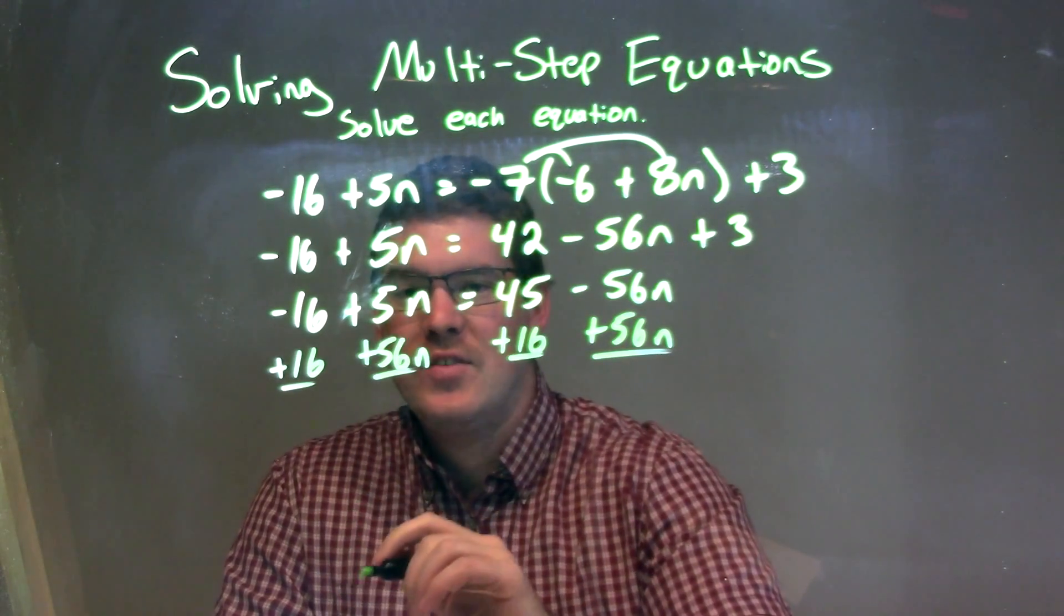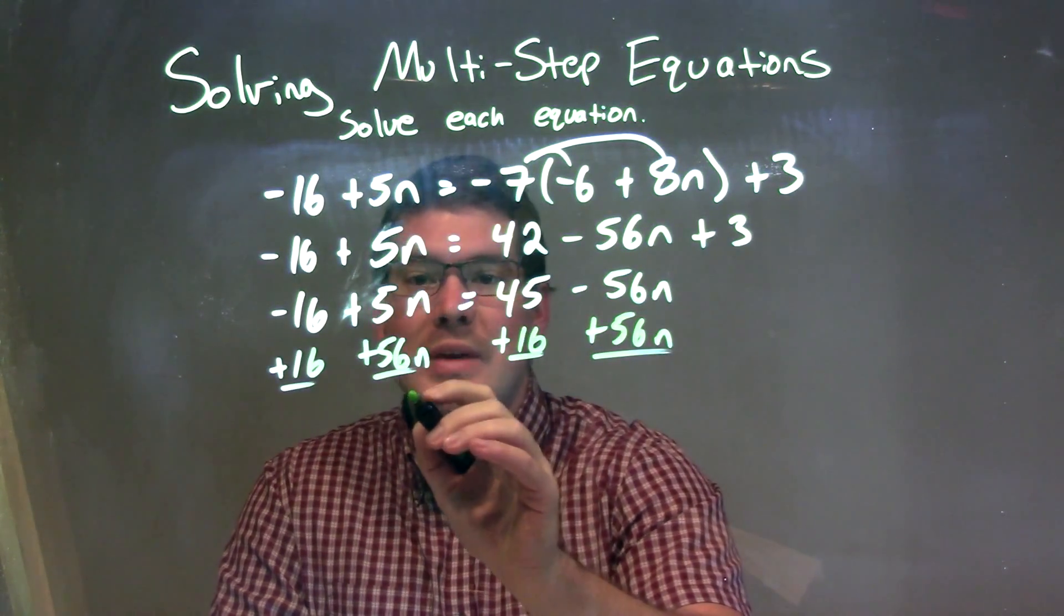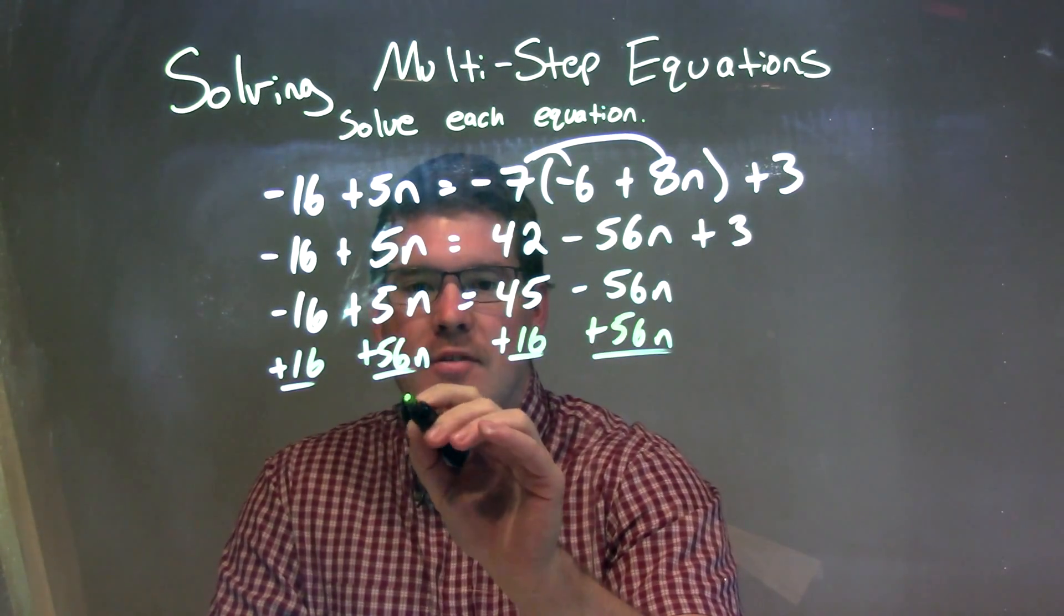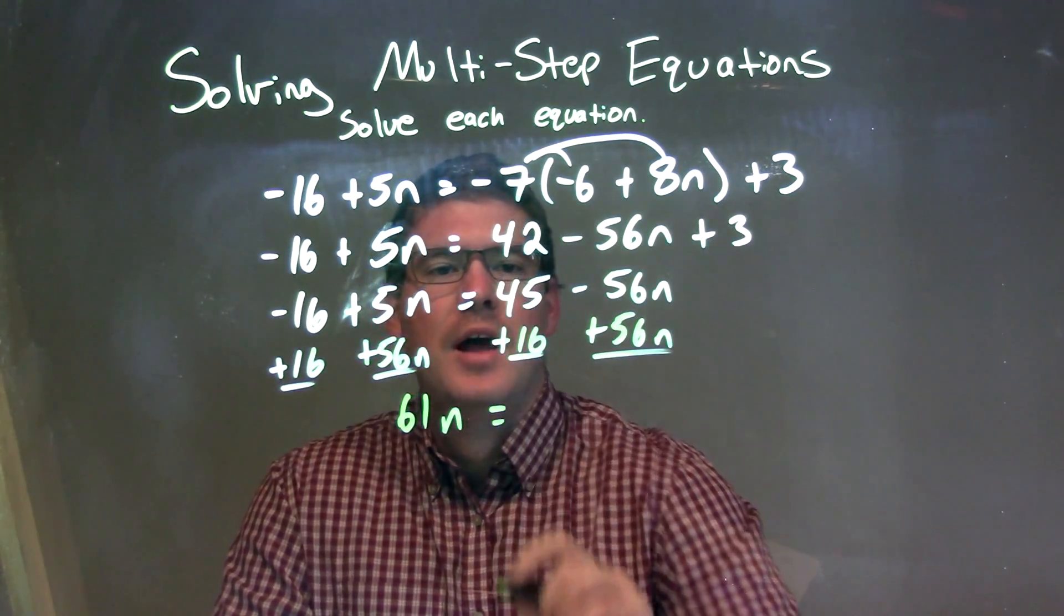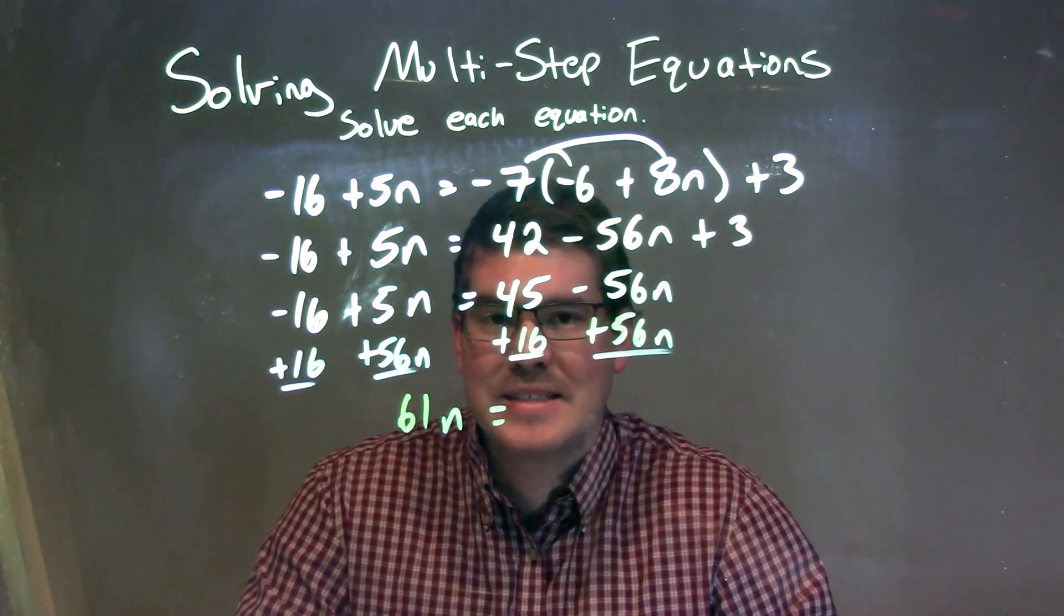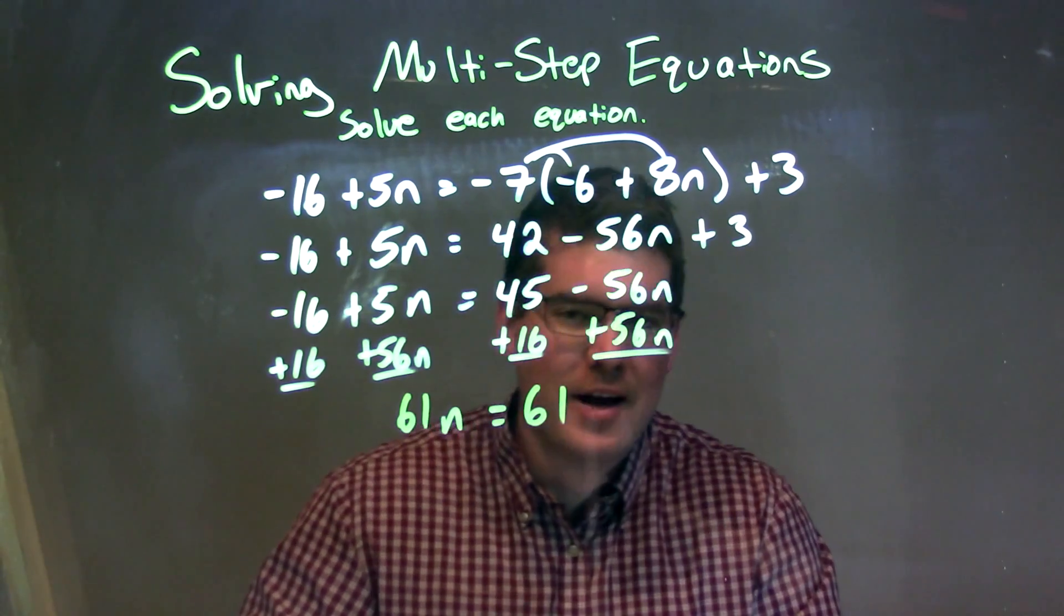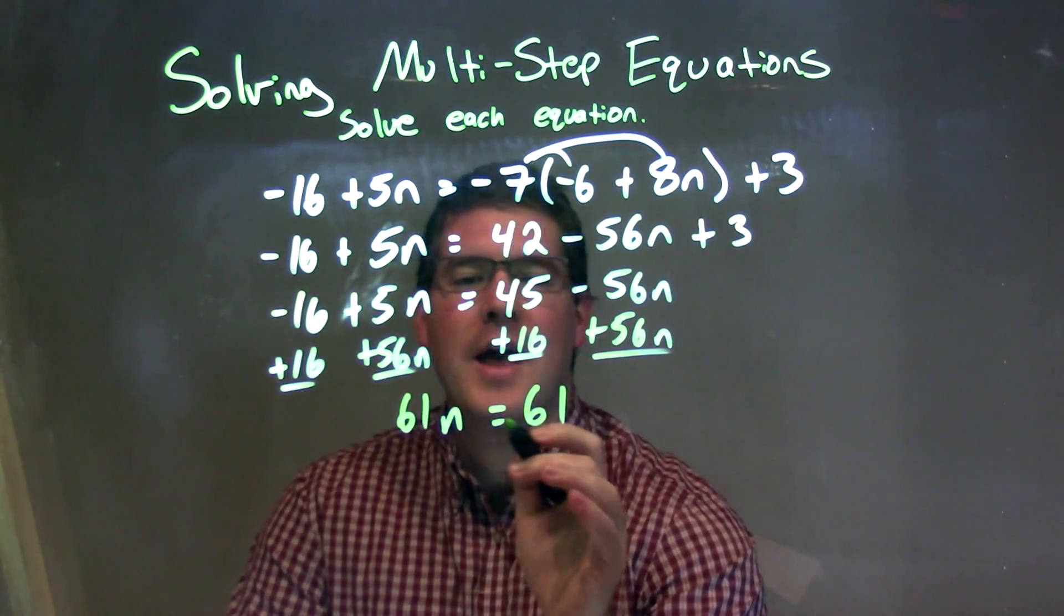5n plus 56n comes out to be 61n, and that's equal to 45 plus 16, which is also 61. Funny how that happens, right?